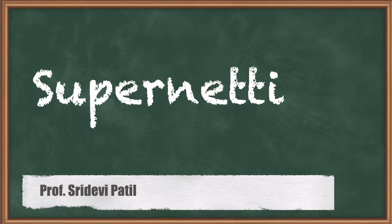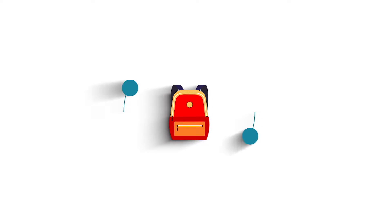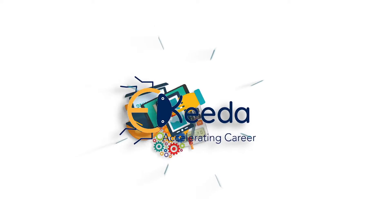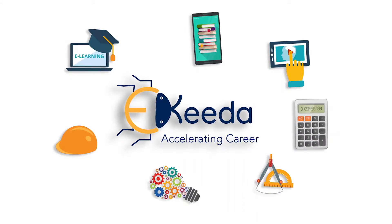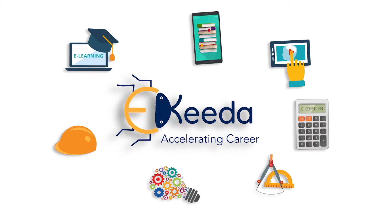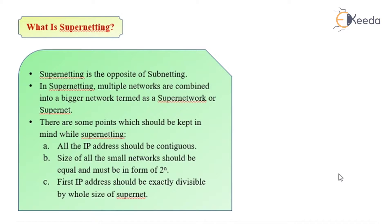Dear students, let us study the sub-concept of supernetting today. Supernetting is the opposite of subnetting, which is the division of a network into smaller networks. In supernetting, multiple networks are combined into a bigger network termed as a supernetwork or supernet.